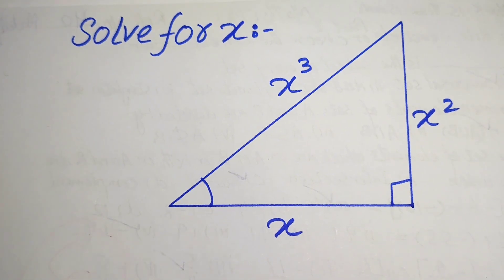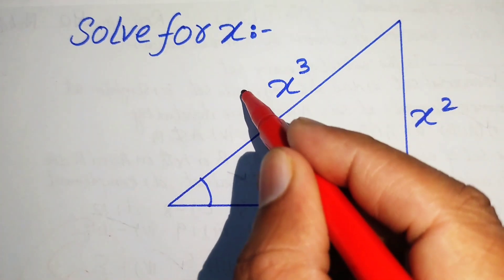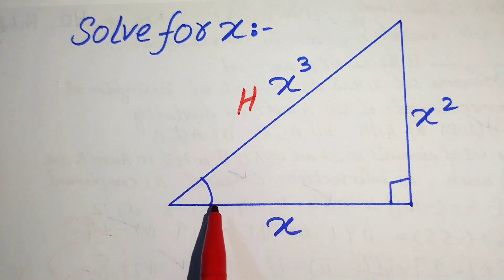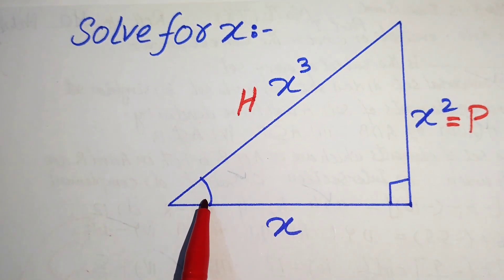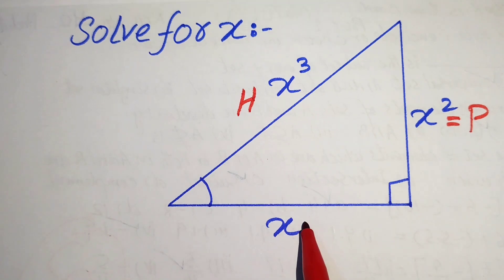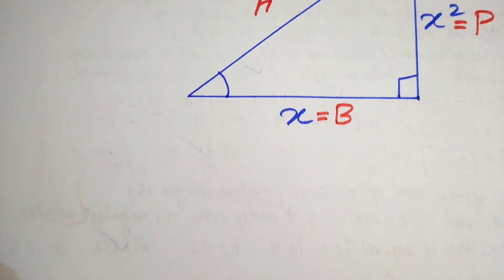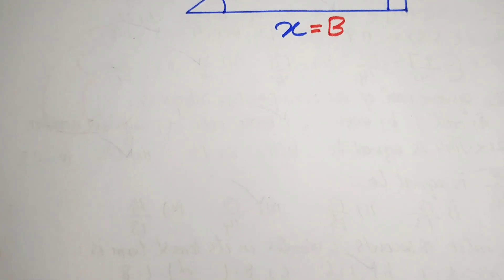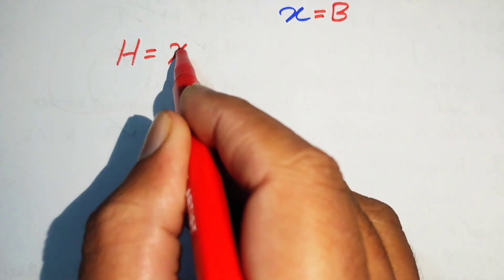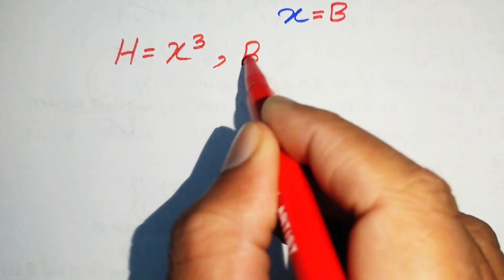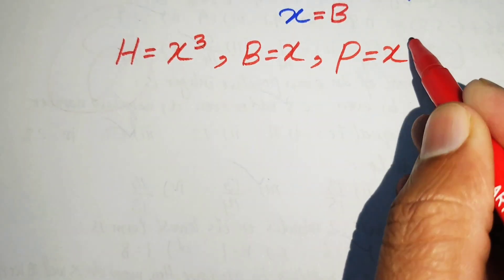Now, you know about the right triangle: the side opposite to the right angle is known as the hypotenuse, the side opposite to the unknown angle is known as the perpendicular or altitude, and the side joining these two angles is called the base. So we have: hypotenuse equals x cubed, base equals x, and perpendicular equals x squared.